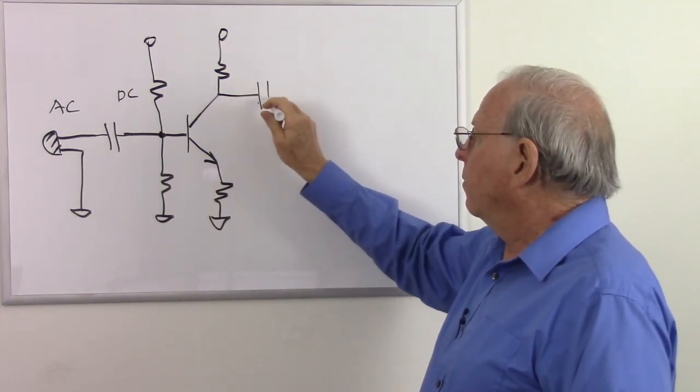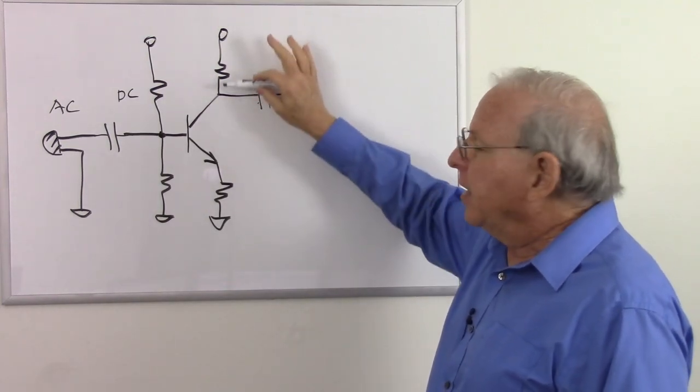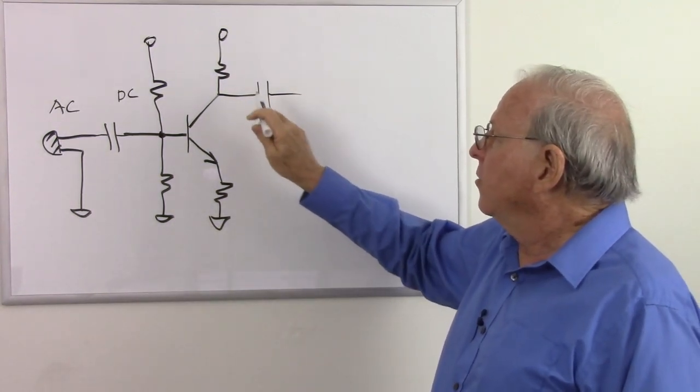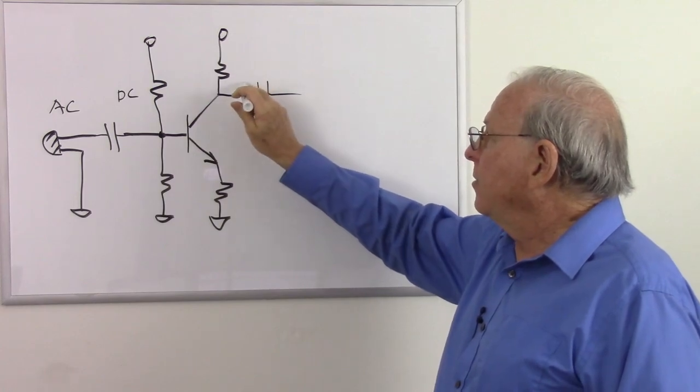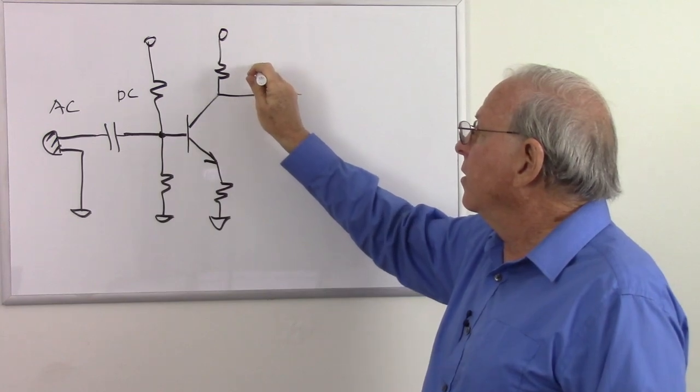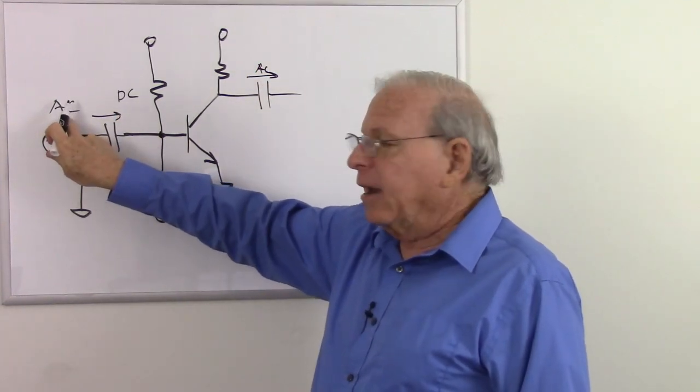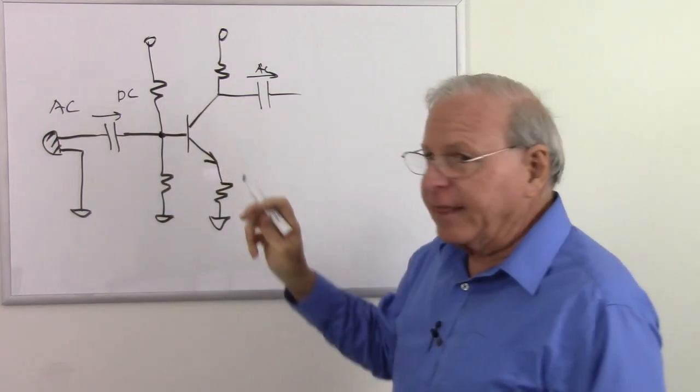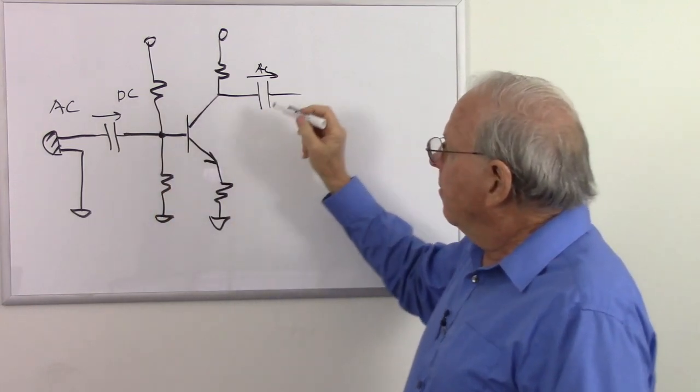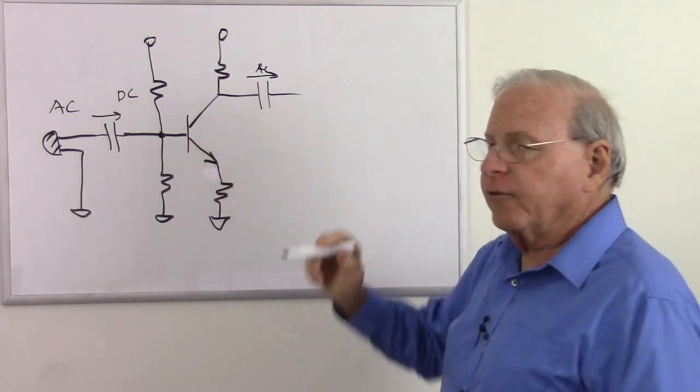And of course going to the next stage over here we would have another coupling capacitor because we would have similar appropriate DC voltages over here and different DC voltages over here. So we have to have something to isolate those DC voltages from each other, but allowing the alternating current to go through. So AC from the microphone is able to go through. I show it going through from left to right, that's the signal direction. Of course alternating current goes both directions, but as we know a capacitor tends to pass alternating current and to block direct current.